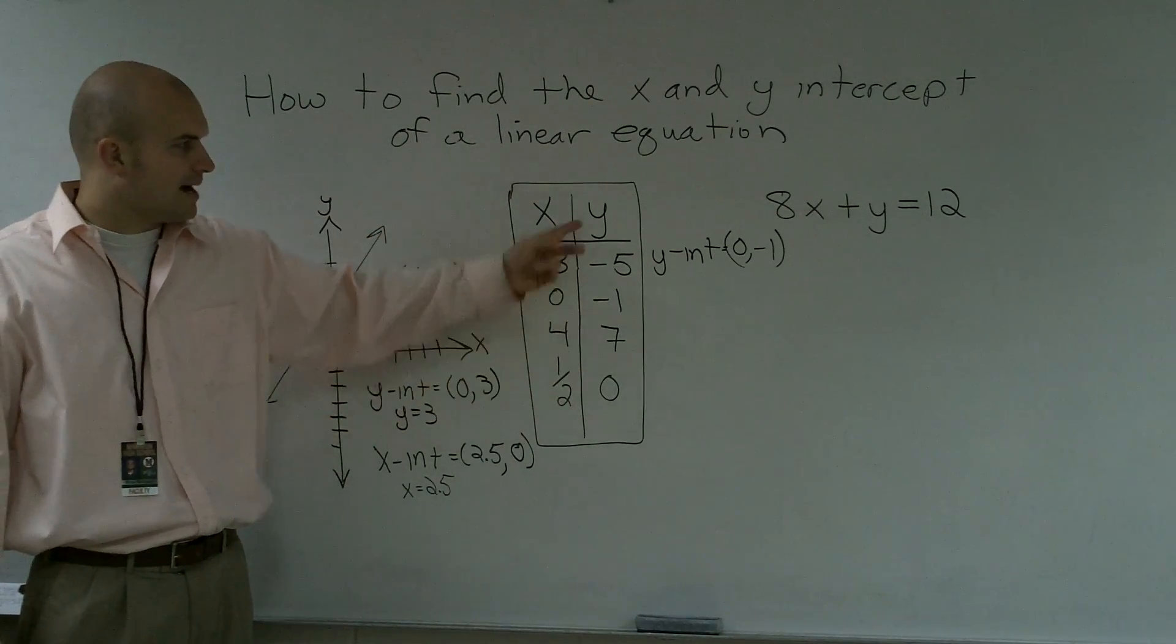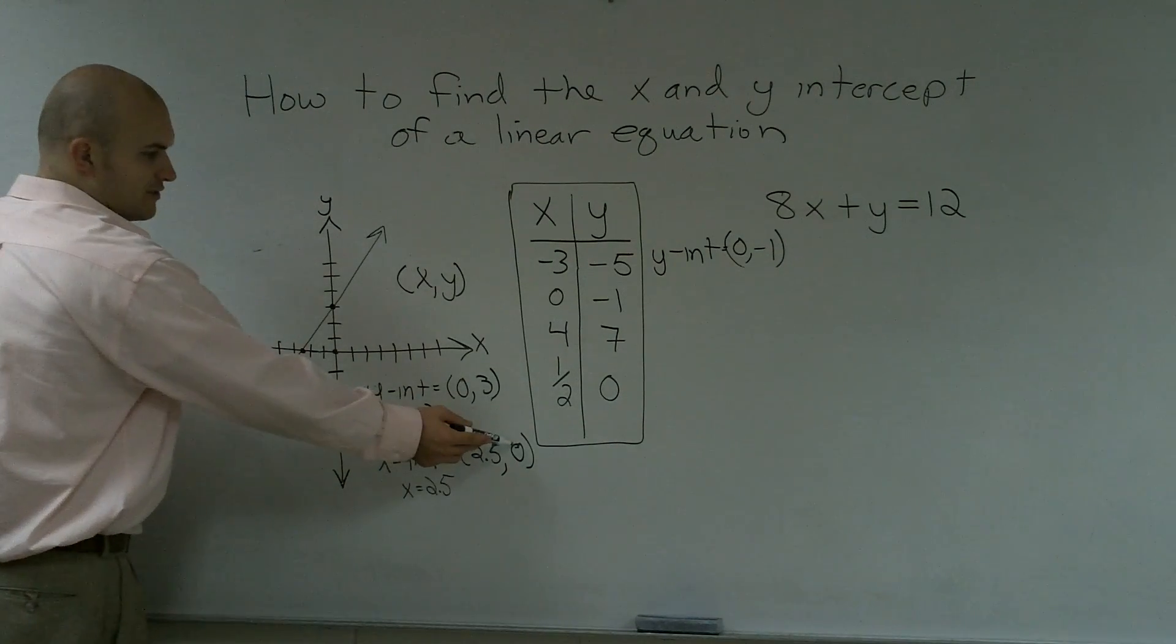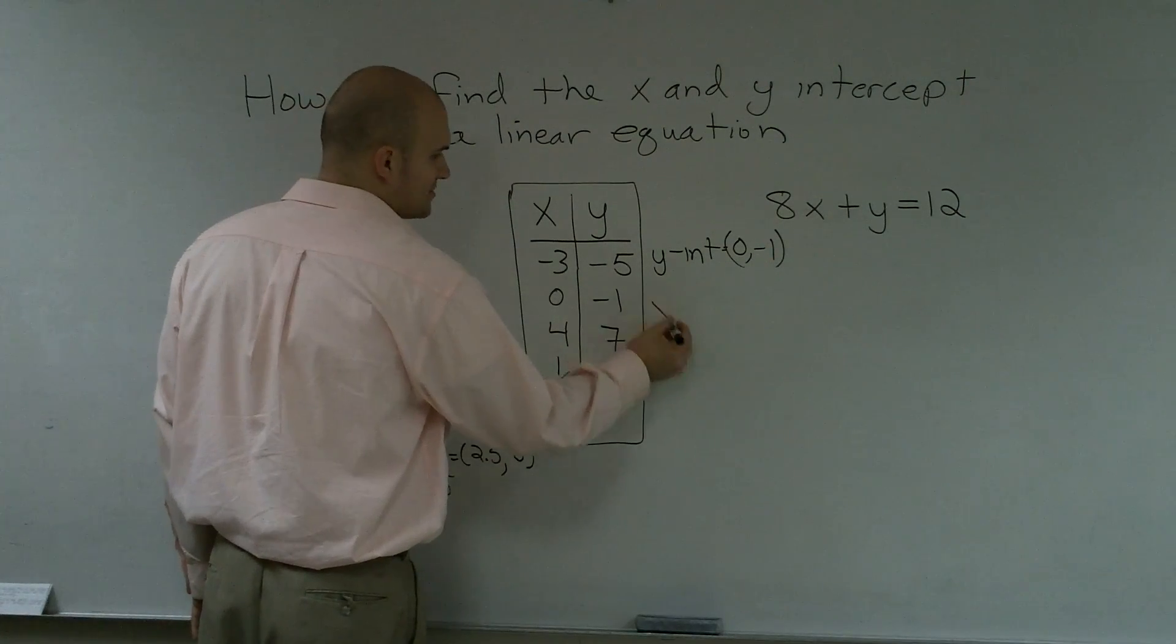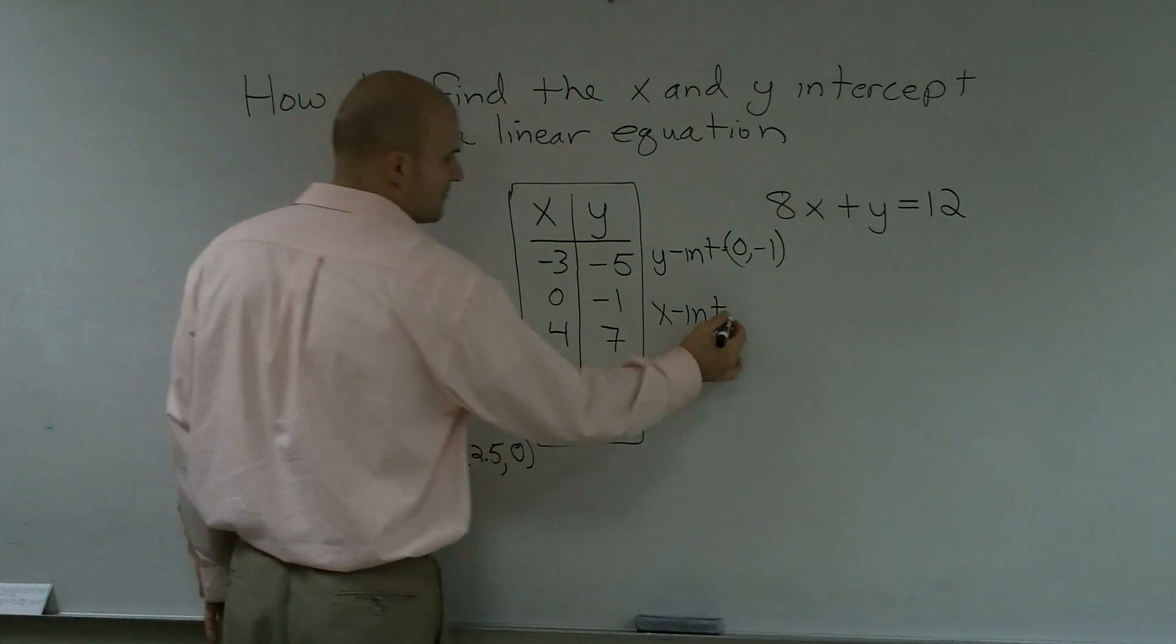And if I wanted to find my x-intercept, I know that at the x-intercept, my y-value is 0. Notice the 0 there, the 0 on the coordinate point. So therefore, my x-intercept is when y equals 0, which is 1 half.